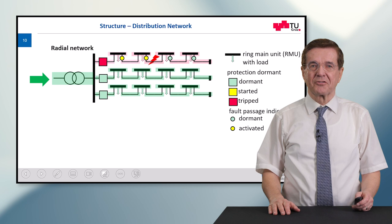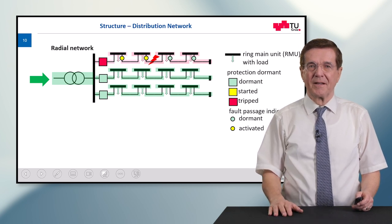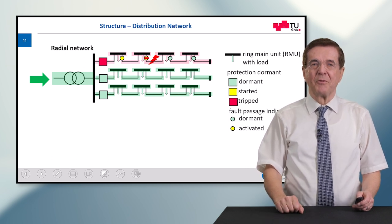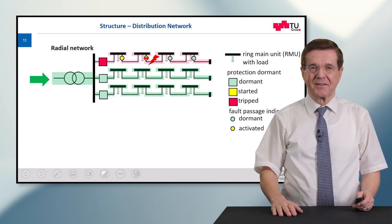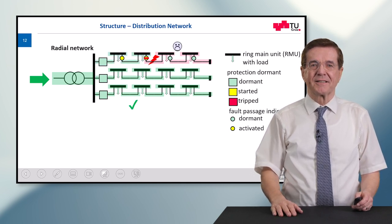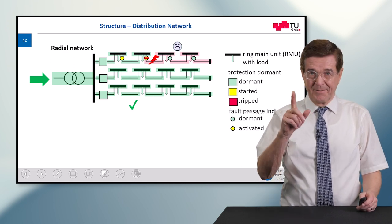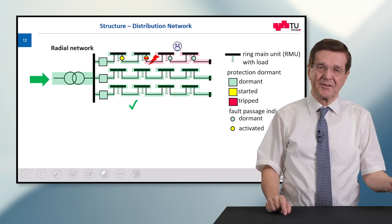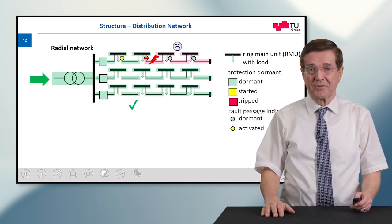After a short time, protection trips this feeder and the electricity supply is lost to everybody. Operations staff then open one circuit breaker — the last one upstream of the fault — and re-energize the feeder at the substation. This means everybody is back on power except those at the end of the feeder: 50% of the line is on power, 50% is out of power until the fault is repaired, which may take quite a time.